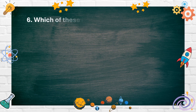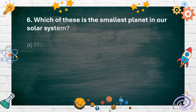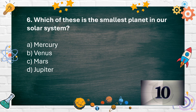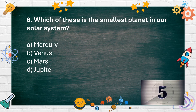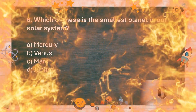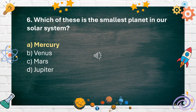Number 6. Which of these is the smallest planet in our solar system? A. Mercury, B. Venus, C. Mars, D. Jupiter. The answer is A. Mercury.